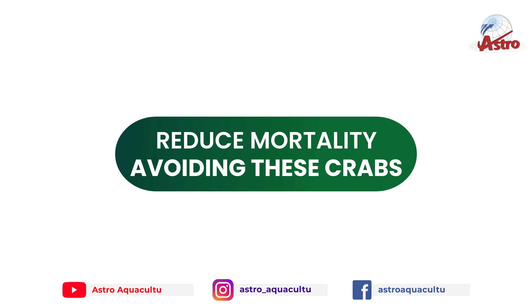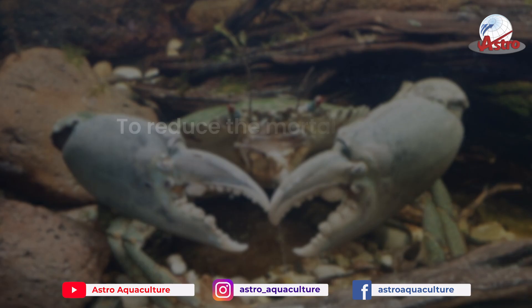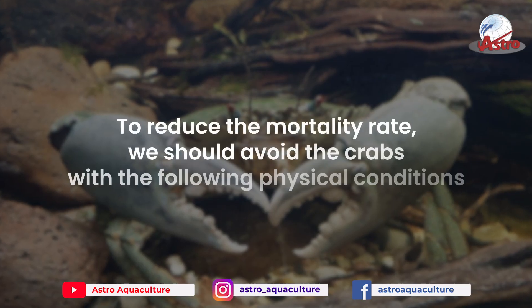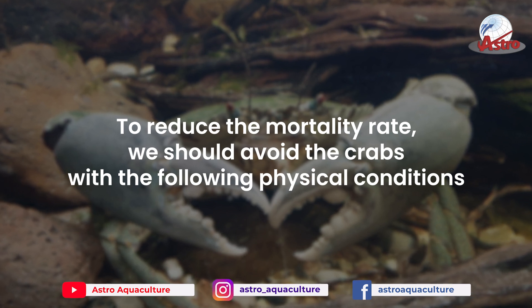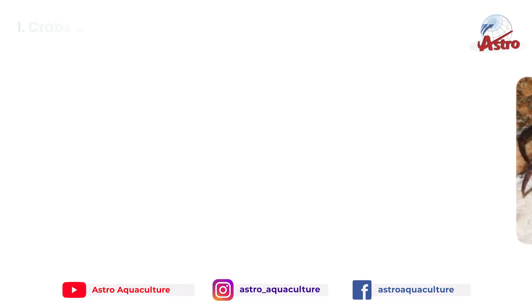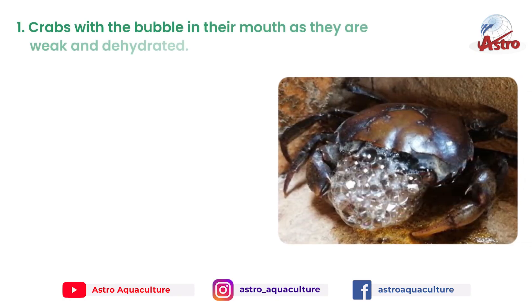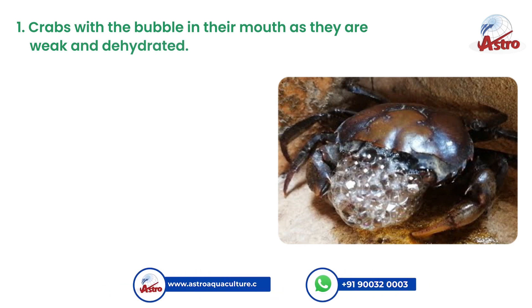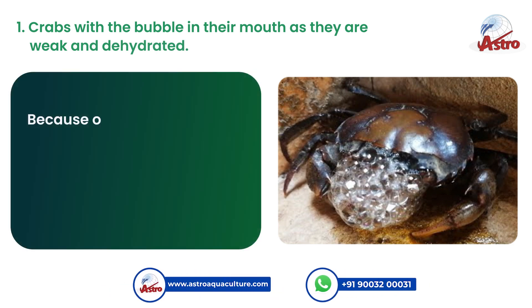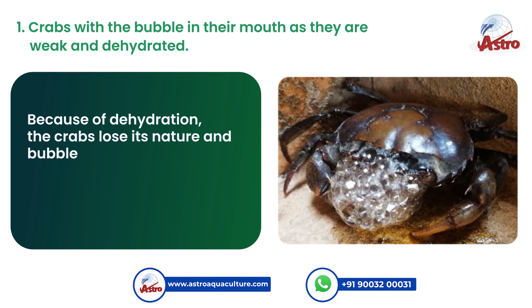To reduce the mortality rate, we should avoid crabs with the following physical conditions. First, crabs with bubbles in their mouth, as they are weak and dehydrated. Because of dehydration, the crabs lose their natural state and bubbles arise from the mouth.